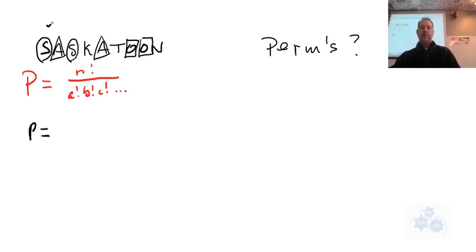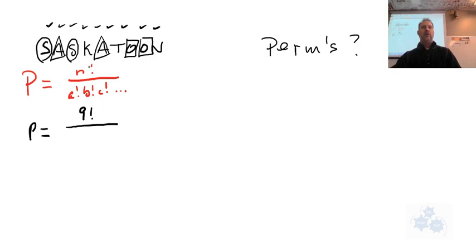The formula says we take the total number of letters — that's nine — so nine factorial, and we divide it by the number of repeated objects factorial as a product of all of them. There are two S's so we put two factorial in the denominator, two A's so another two factorial, and two O's so another two factorial.